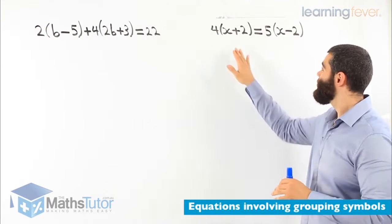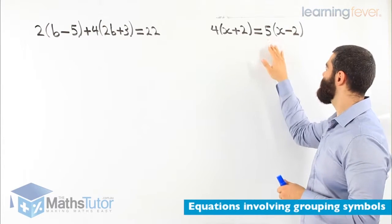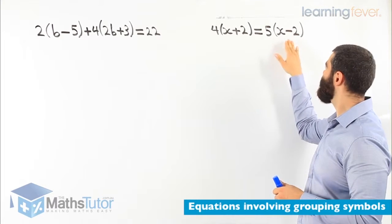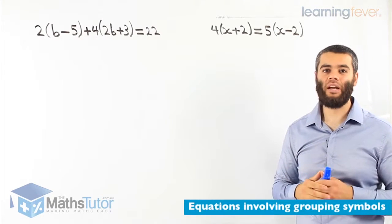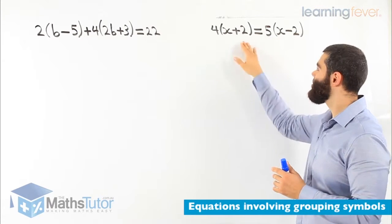Some more equations. 4, open bracket, x plus 2, close bracket, equals 5, open bracket, x minus 2, close bracket. We have here grouping symbols on both sides.